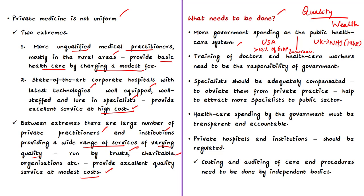Europe provides government-funded universal healthcare. For example, the UK's National Health Service — a comprehensive public health service under government administration established in 1948 — covers virtually the entire population with services free except for minor charges. It is primarily financed by general taxes with smaller contributions from local taxes, payroll contributions, and patient fees. Additionally, training of doctors and healthcare workers should be the government's responsibility, specialists should be adequately compensated to reduce reliance on private practice, and healthcare spending must be transparent and accountable under the RTI Act 2005.